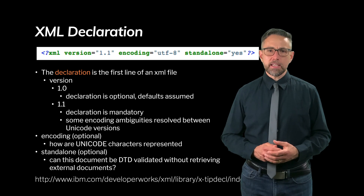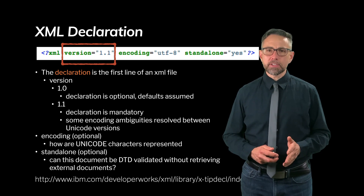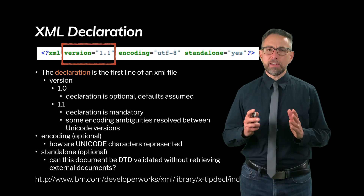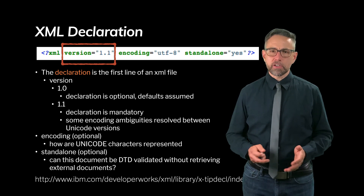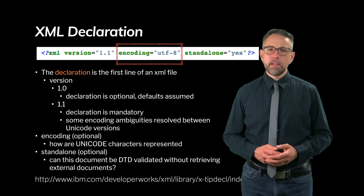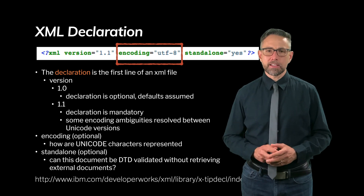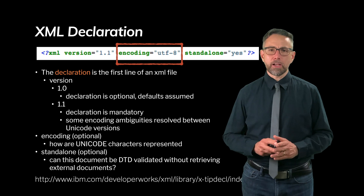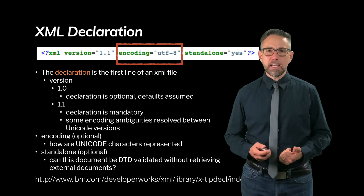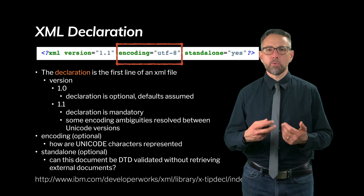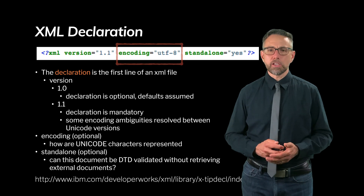In the declaration you see the XML keyword on the left, then an attribute called 'version' assigned with an equal sign and the string '1.1' in double quotes, indicating the file follows XML version 1.1. Next you see an attribute called 'encoding' assigned the string 'UTF-8', meaning the bits in the file should be interpreted as UTF-8 characters when a program reads them. UTF-8 is the most widely used character encoding.